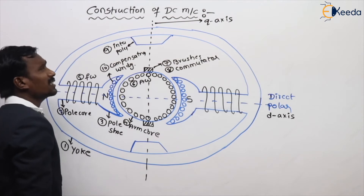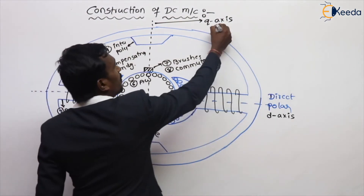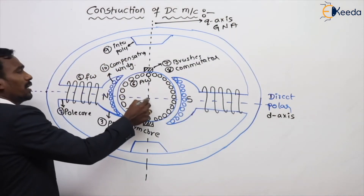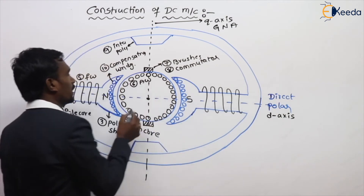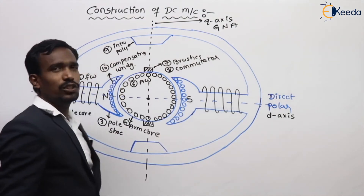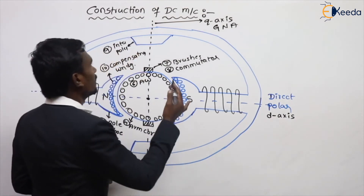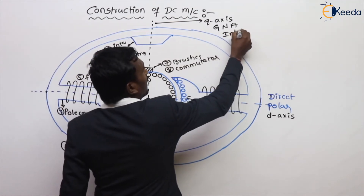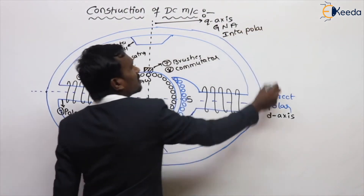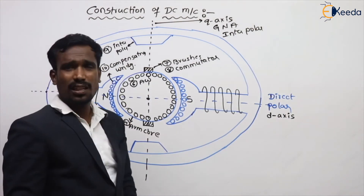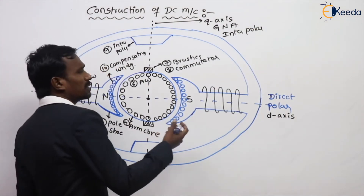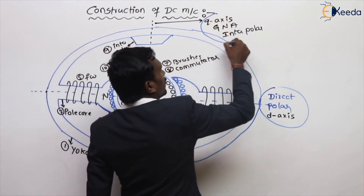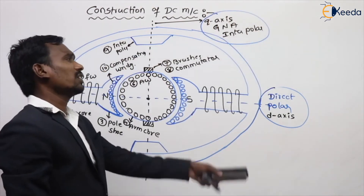The Q-axis is also called the geometrically neutral axis (GNA), because the length from here to here is exactly equal to here to here — that is why it is geometrically neutral. This is also called the interpolar axis. These are the fixed axes — D-axis, Q-axis, and interpolar axis — they do not change.